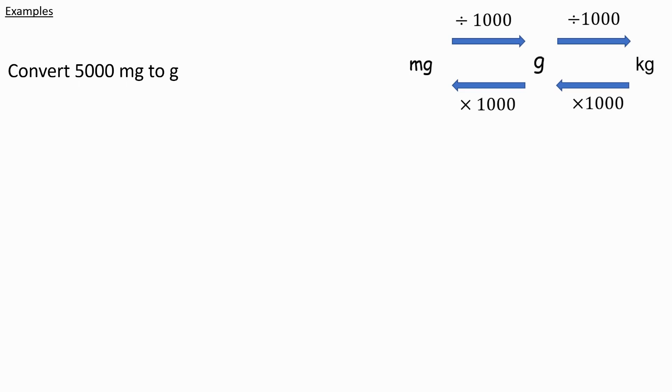Here are some examples. If I wanted to change 5,000 milligrams to grams, you would just do 5,000 divided by a thousand, which gives you 5 grams. 6,500 milligrams to grams, you would again divide by a thousand, giving you 6.5 grams. Remember that the decimal would move back 3 places to give us 6.5 grams.